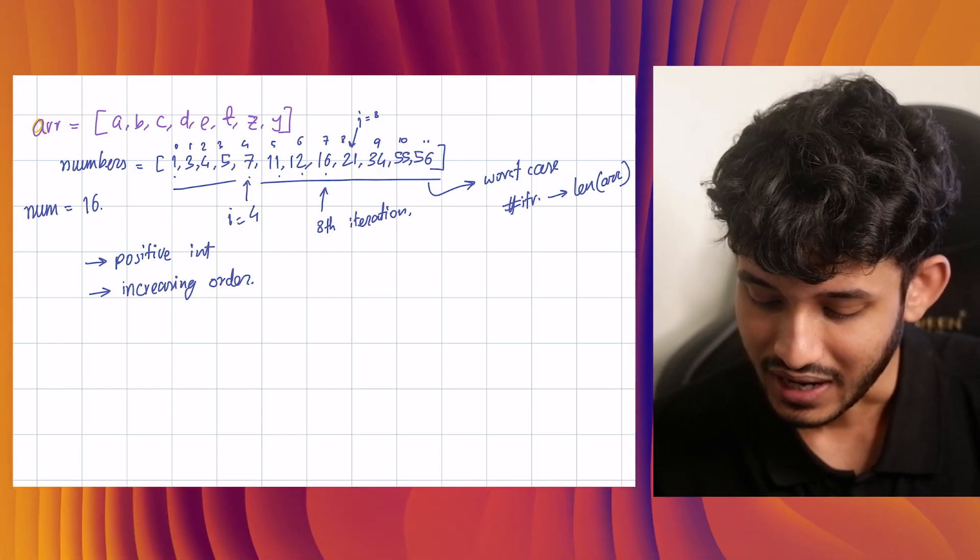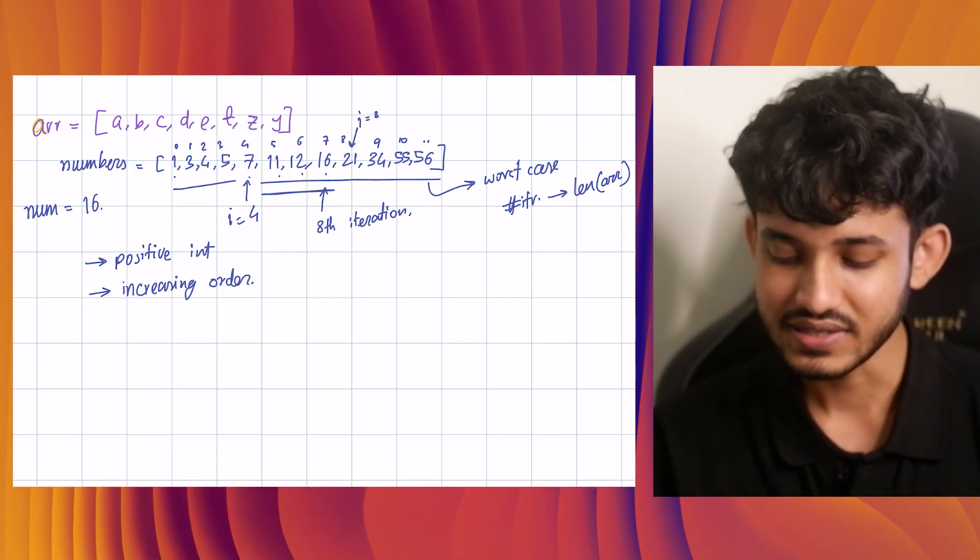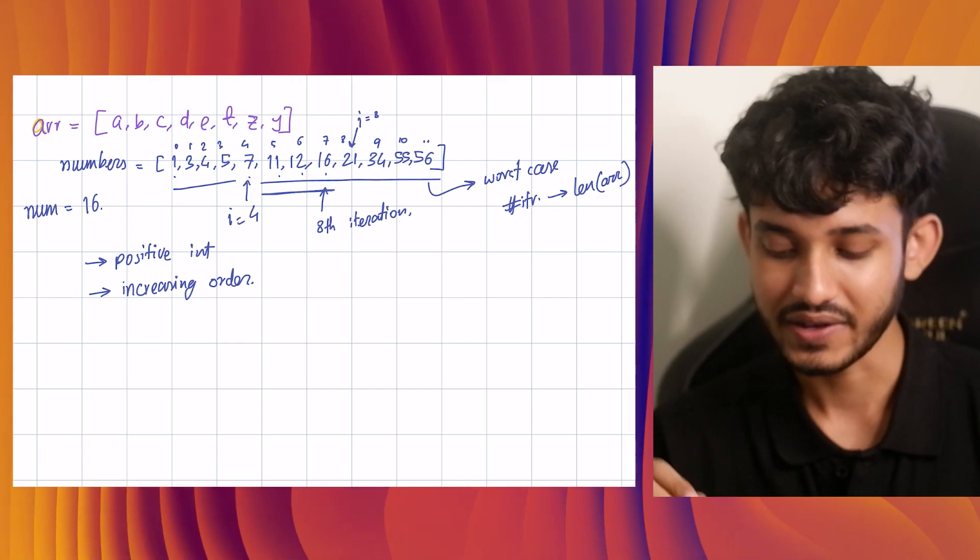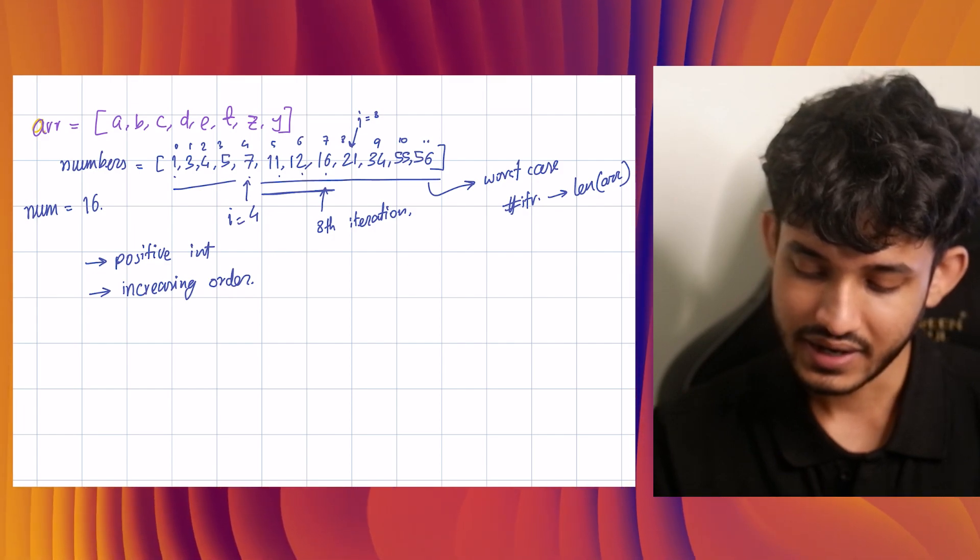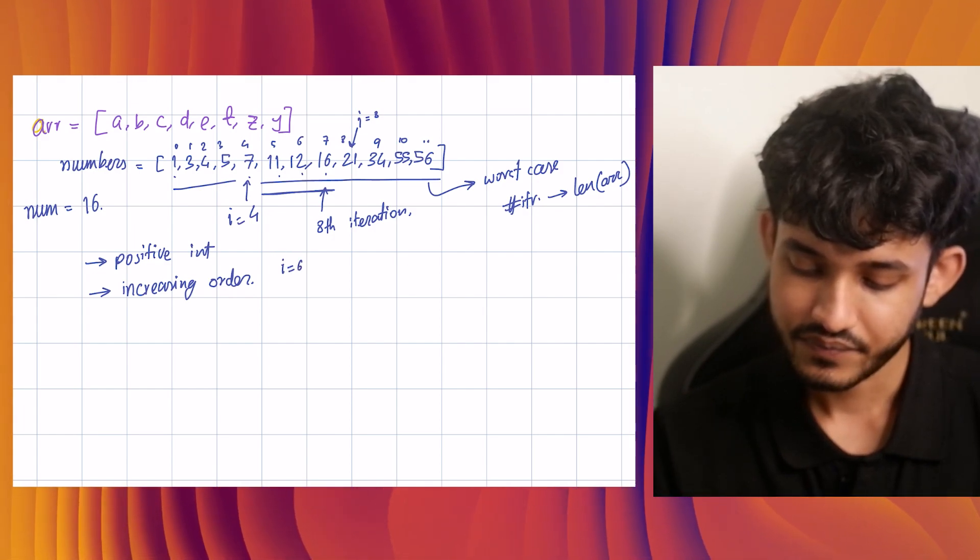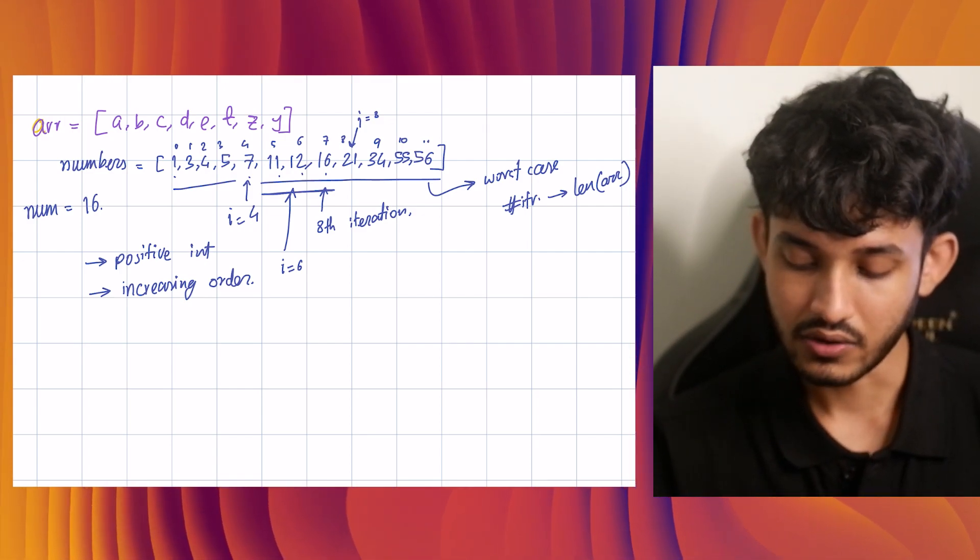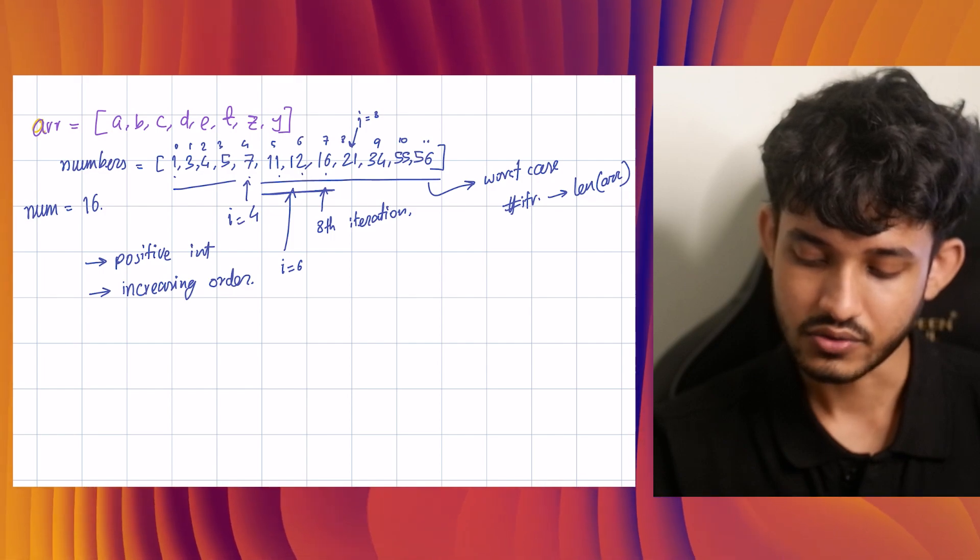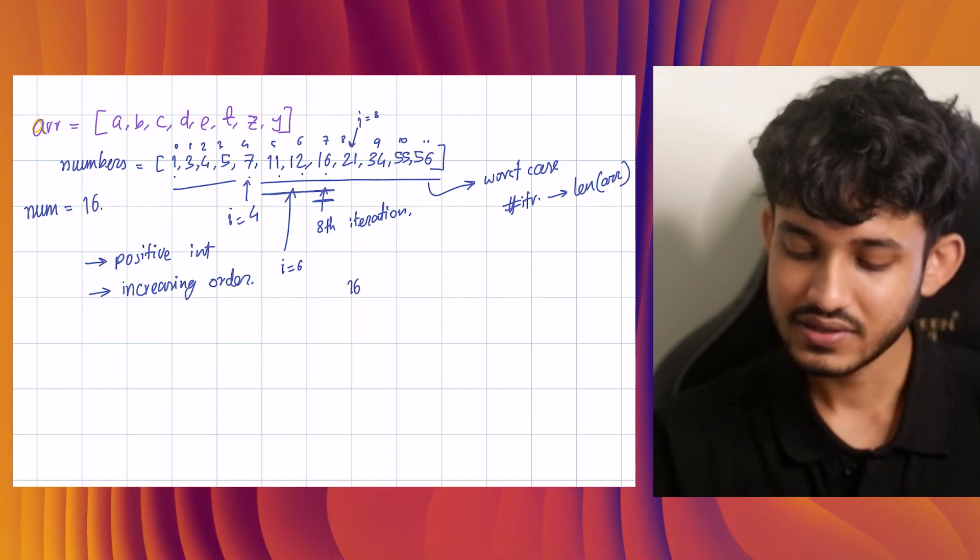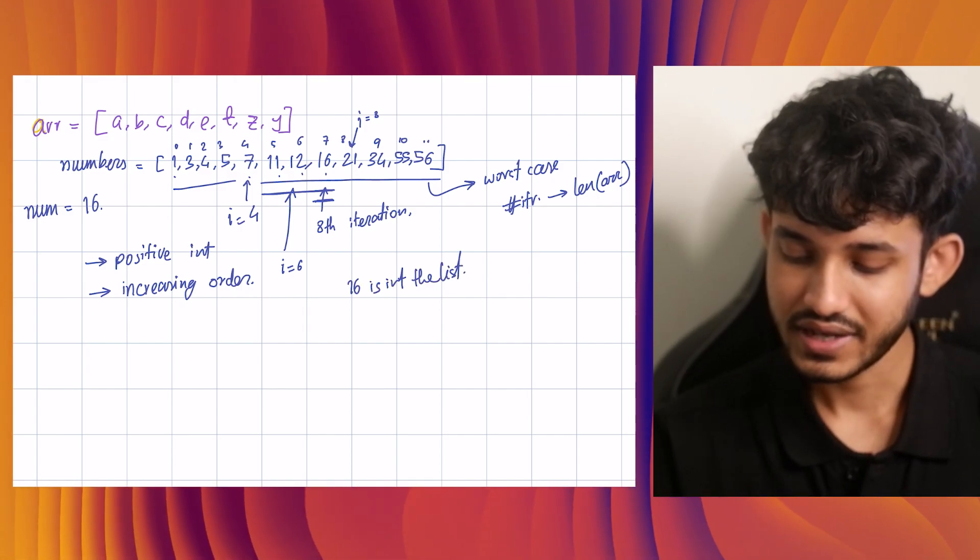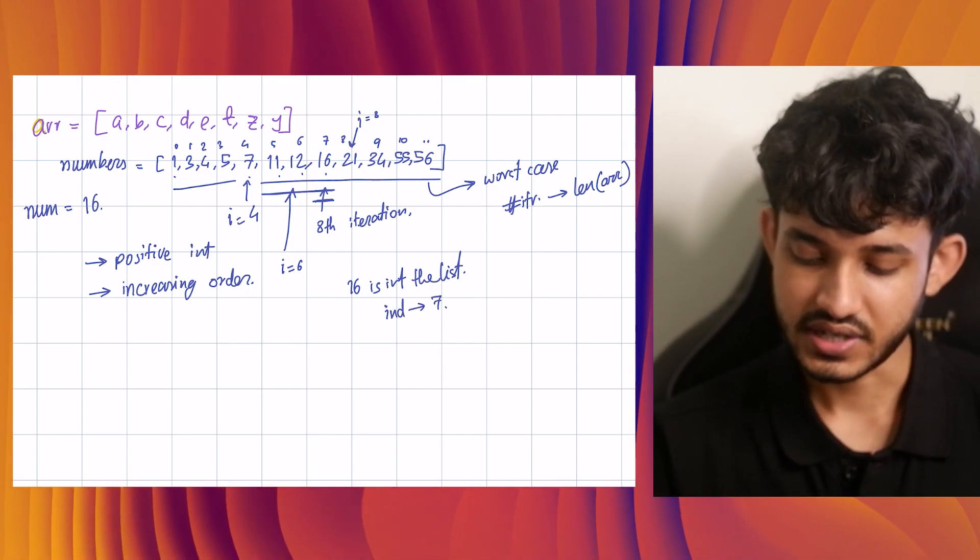Okay. We know it is after seven and before 21. So it is inside this, it has to be these three indices - five, six or seven. Now, again, if we take a random element in this, maybe now i ends up at six. Now we see, okay, this is 12. Now 16 is greater than 12. So it has to be to the right of it. Now our whole area has boiled down to only one index. And we have found that 16 is in the list. Its index is seven.